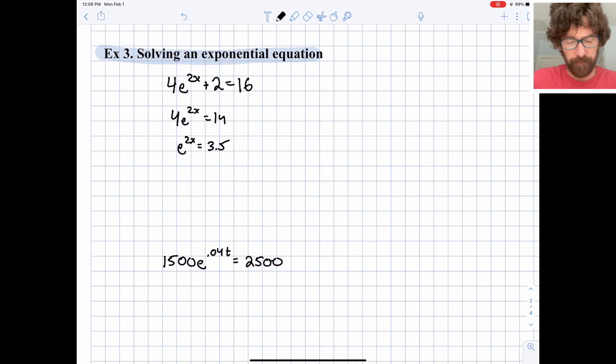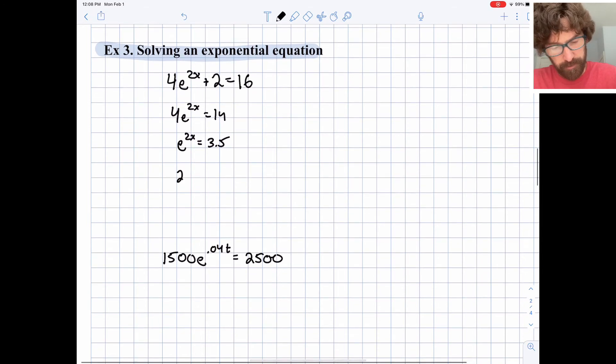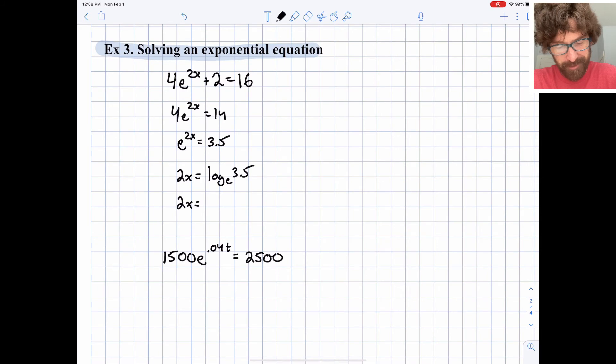Let's write this in logarithm form. And we can write it like so. 2x equals log base e of 3.5. And then remember, log base e is just the natural log of 3.5.